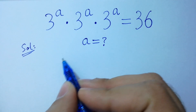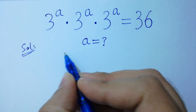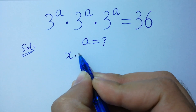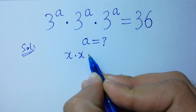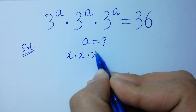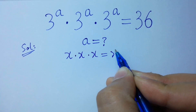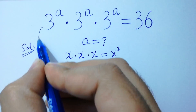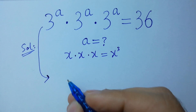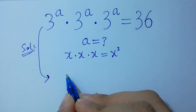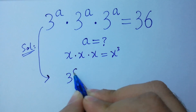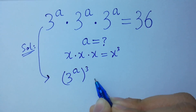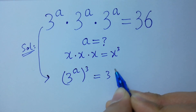As we know, x times x times x equals x cubed. So it will be 3 to the power a, cubed, equal to 36.